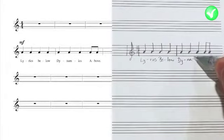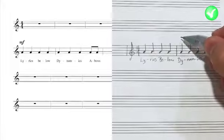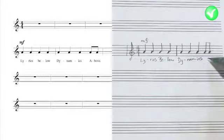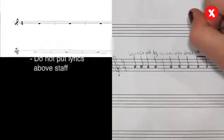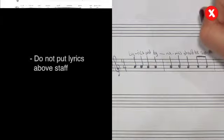Lyrics always go below the staff. For clarity, dynamic markings would then go above. This example may look correct, but it does not follow the conventions of music notation and may confuse the performer.